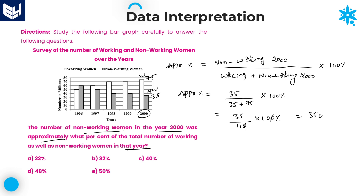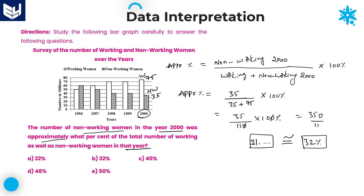That is equal to 350 divided by 11. What is 350 divided by 11? 11 into 31 is 341, next remainder 20 — so we are getting approximately 31 point something. According to the options — 22, 32, 40, 48, and 50 — the approximate value is obviously 32 percent. 32 percent is our required answer. Option B is the right answer for this question.